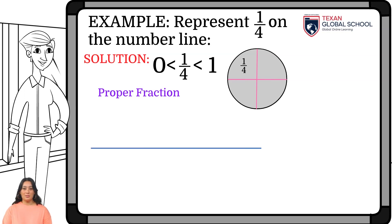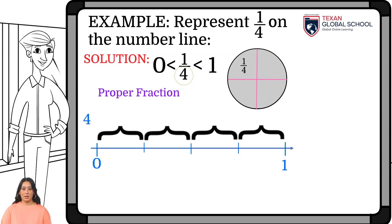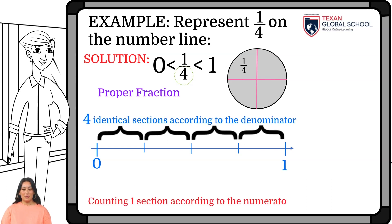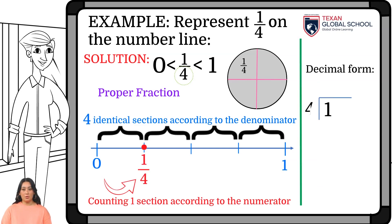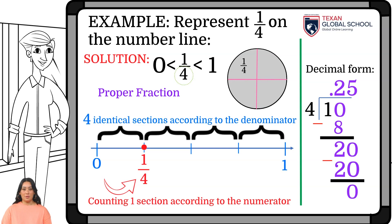So, to represent this fraction on the number line, we know that it will be between 0 and 1. Since the fraction has 4 as denominator, separate the segment into 4 equal parts. And, since the numerator is 1, we can see that the fraction is located in the first segment, as shown on the board. Let us perform the division of 1 by 4. We can see that the result is 0.25. If we add 0.25 four times, the result is 1. The same thing happens if we add a fourth 4 times.